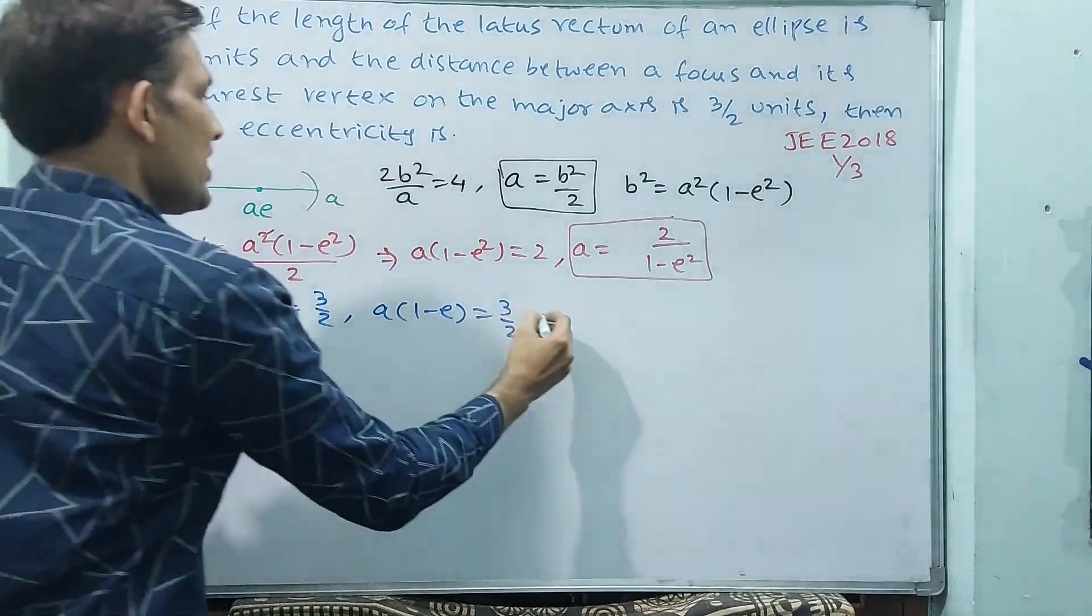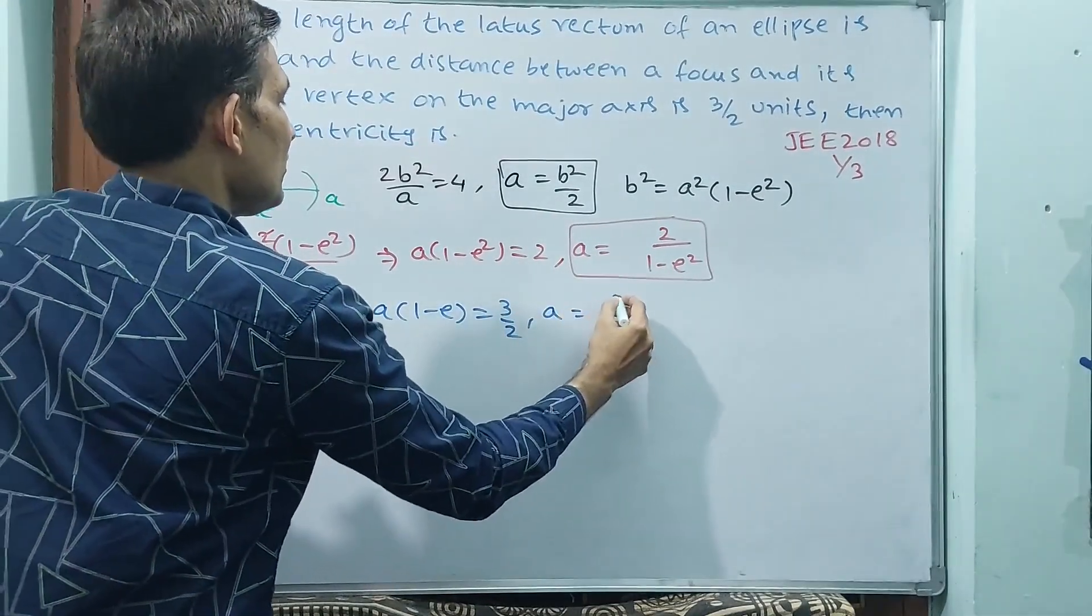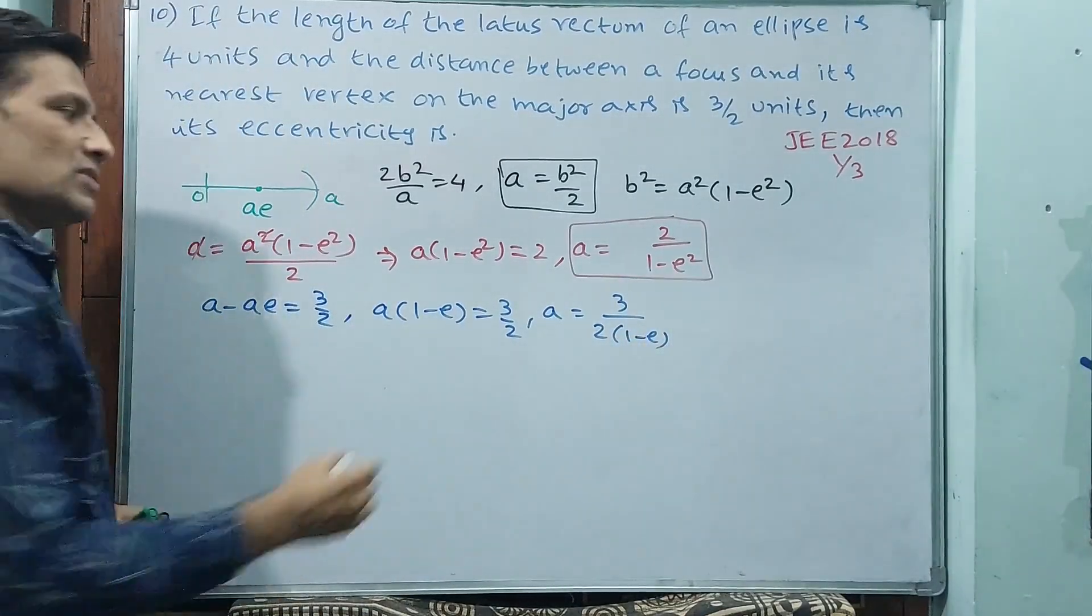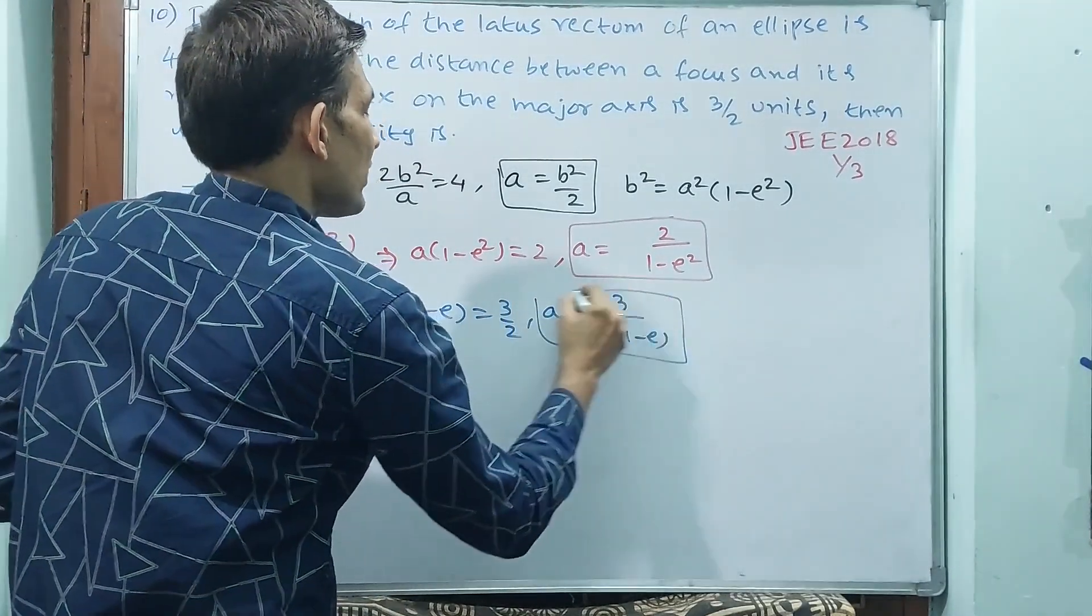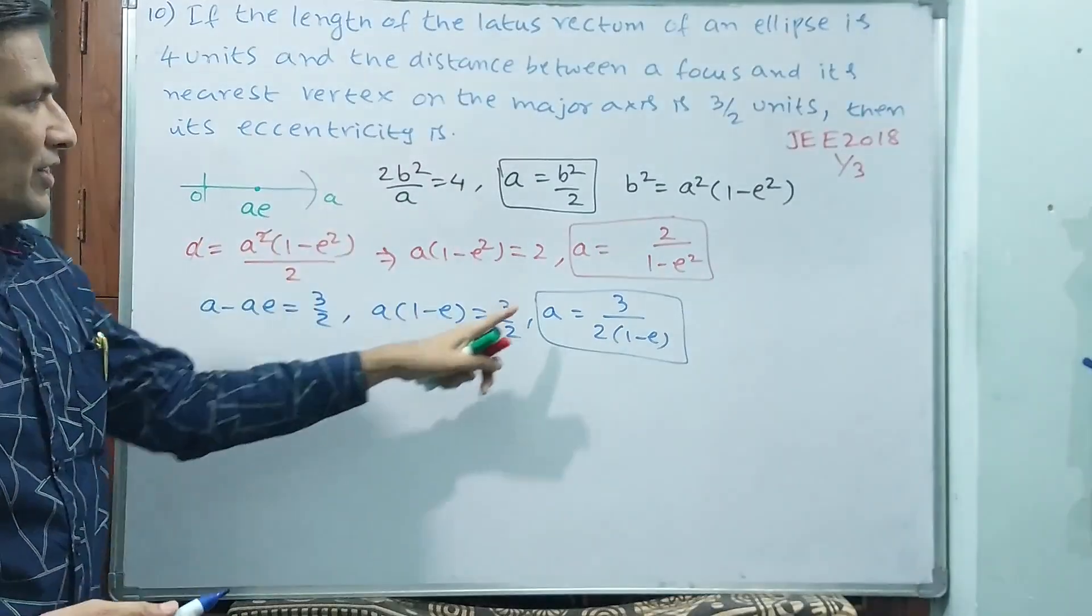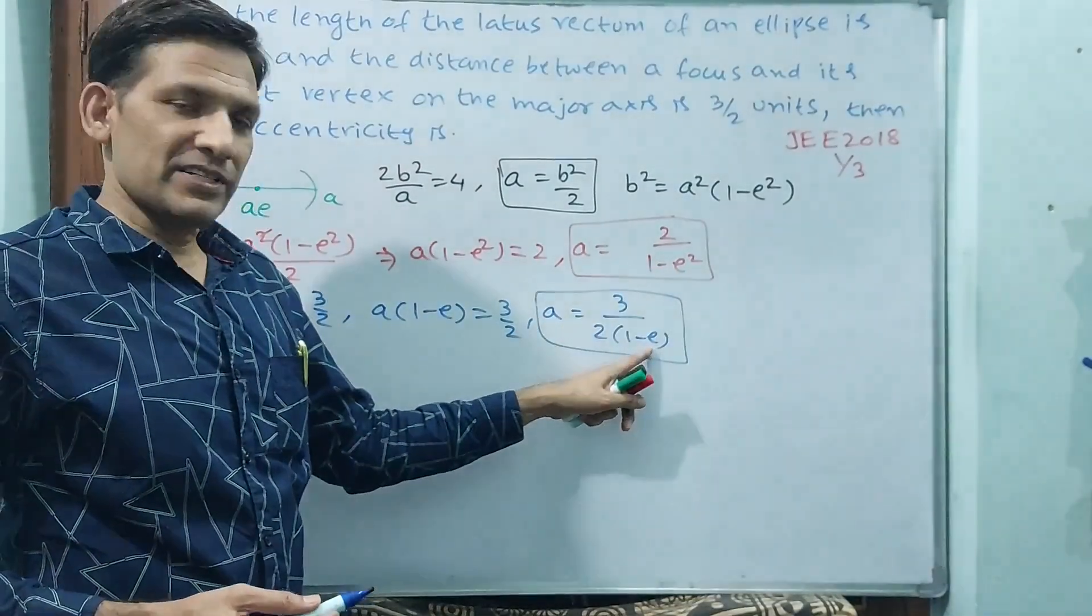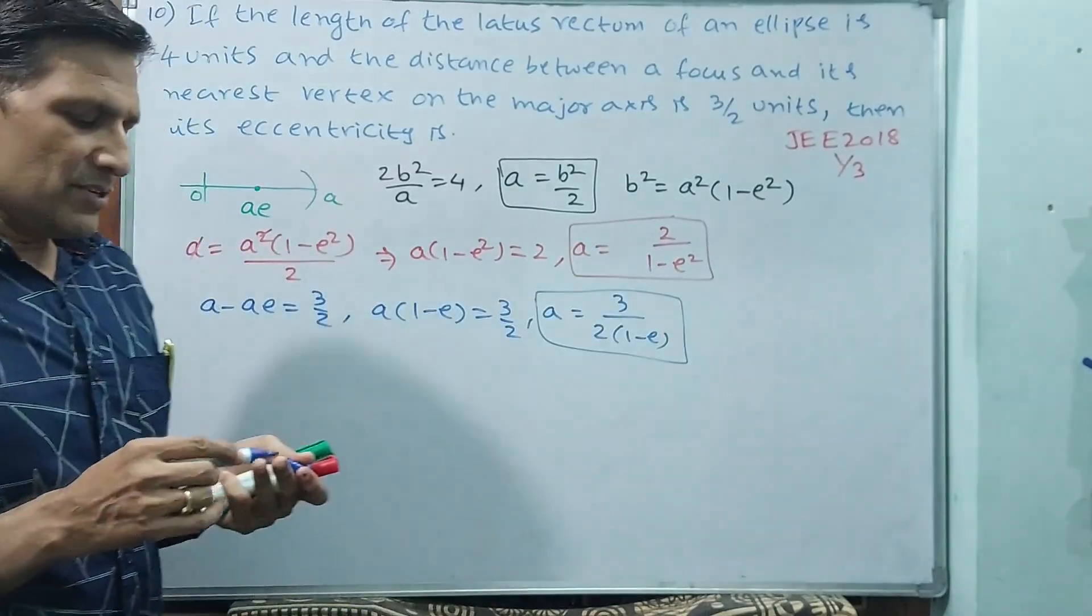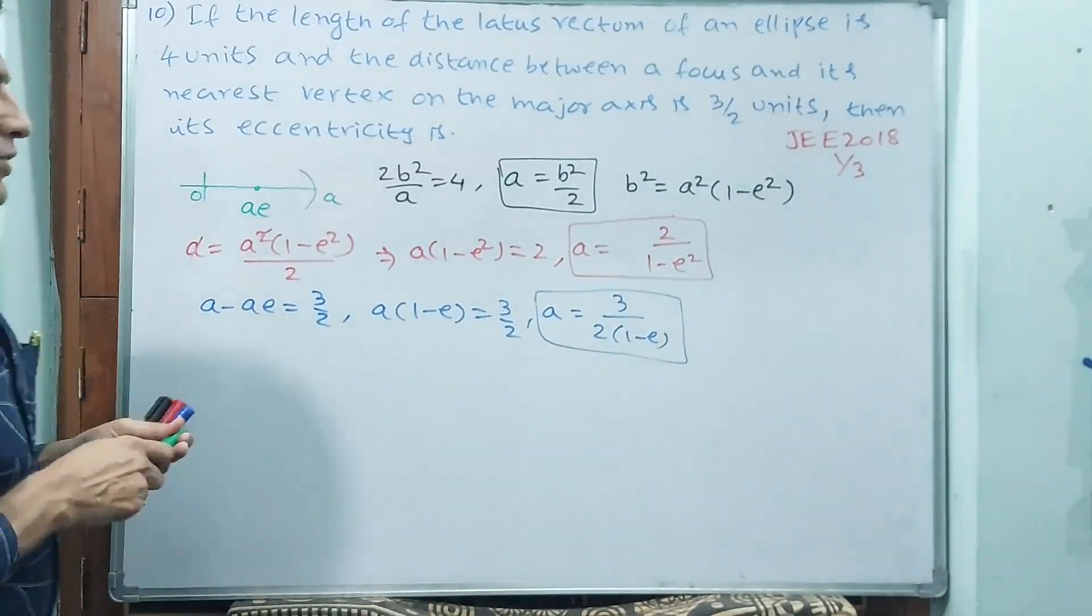Okay, again, a is equal to 3 by 2 divided by 1 minus e. This is also a. Okay, you require eccentricity. See, a is equal to in terms of eccentricity, but the remaining all numbers. You equate these two, you will get e.